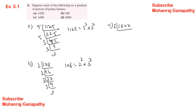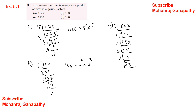Part C: 1800. Dividing: 1800 ÷ 2 = 900, 900 ÷ 2 = 450, 450 ÷ 2 = 225, 225 ÷ 3 = 75, 75 ÷ 3 = 25, 25 ÷ 5 = 5, 5 ÷ 5 = 1. So 1800 is equal to 2 power 3 into 3 power 2 into 5 power 2.